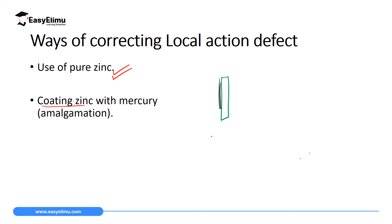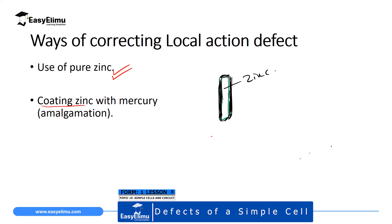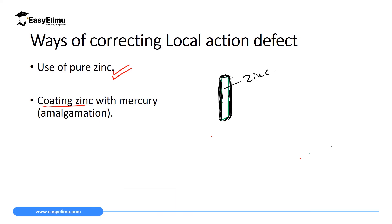Amalgamation involves covering the zinc with mercury, which we call amalgam. When you amalgamate the zinc, you can run the simple cell to the end without the bulb going off. Mercury is used because it is also a good conductor of electricity. This solves the problem of local action as a defect of a simple cell.